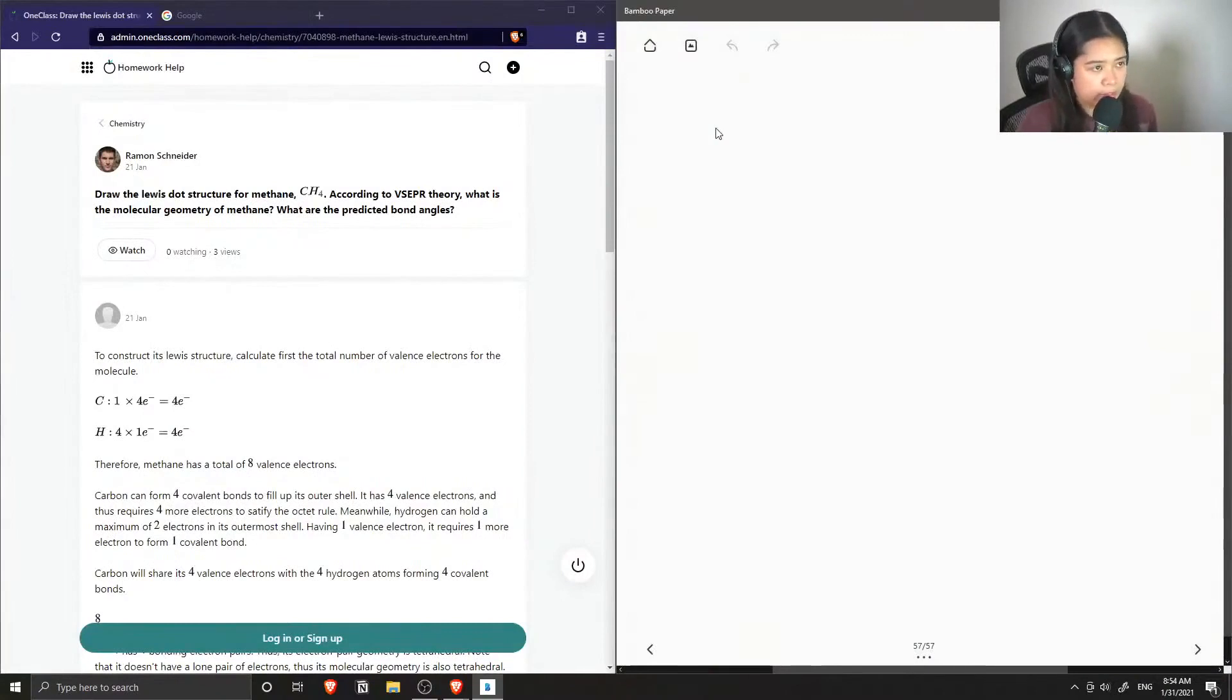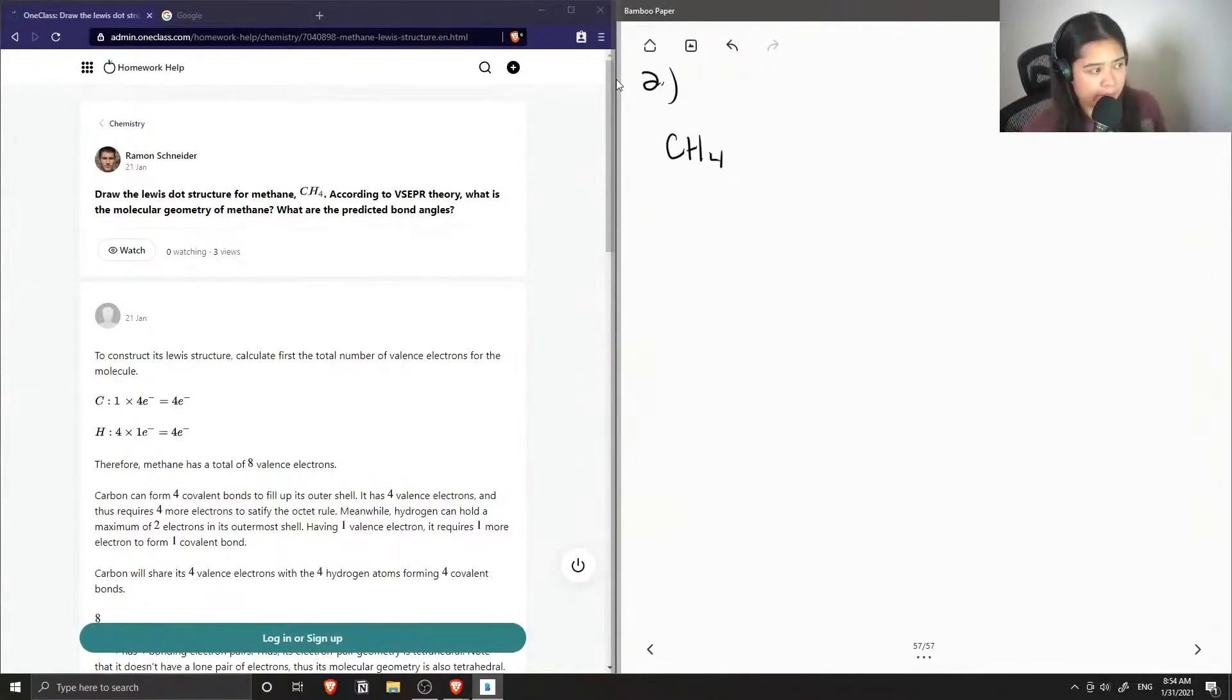Question number two: draw the Lewis dot structure for methane, CH4. According to VSEPR theory, what is the molecular geometry of methane and what are the predicted bond angles?